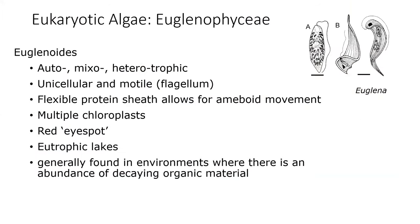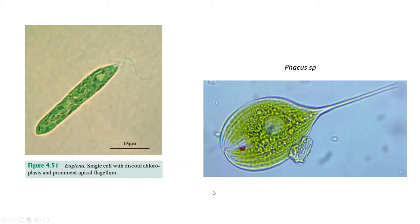This is another group — euglenophytes. Again, this group of algae is mixotrophic, and all species in this group are unicellular. We don't have colonies or filamentous forms. They are important in eutrophic lakes and in environments with high concentration of organic material. We can see the flagellum here and the red eyespot, which is characteristic of this group.